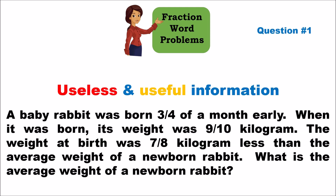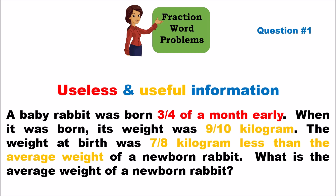We have to separate the useless from the useful. In this question, it says the baby rabbit was born three-fourths of a month early — that's premature. But since we're trying to figure out its weight, whether it was premature or on time has no bearing on the answer. So that is useless information.